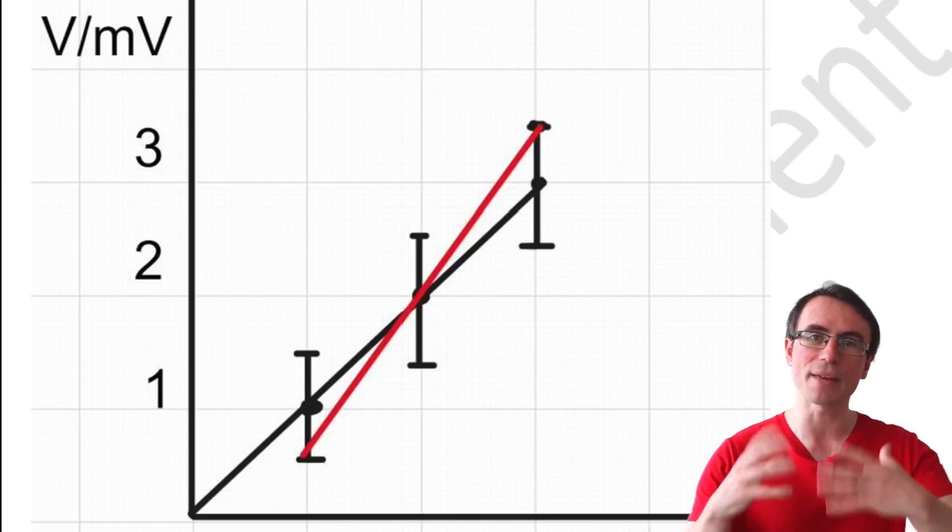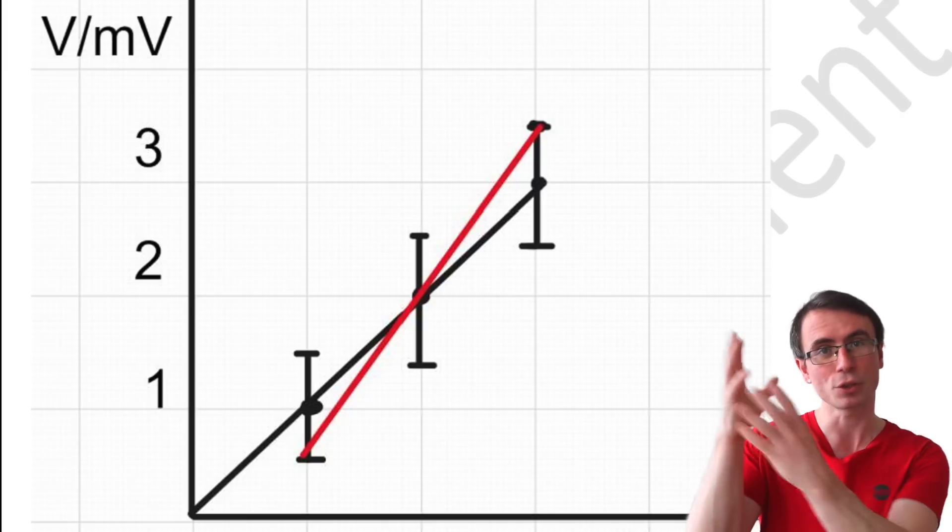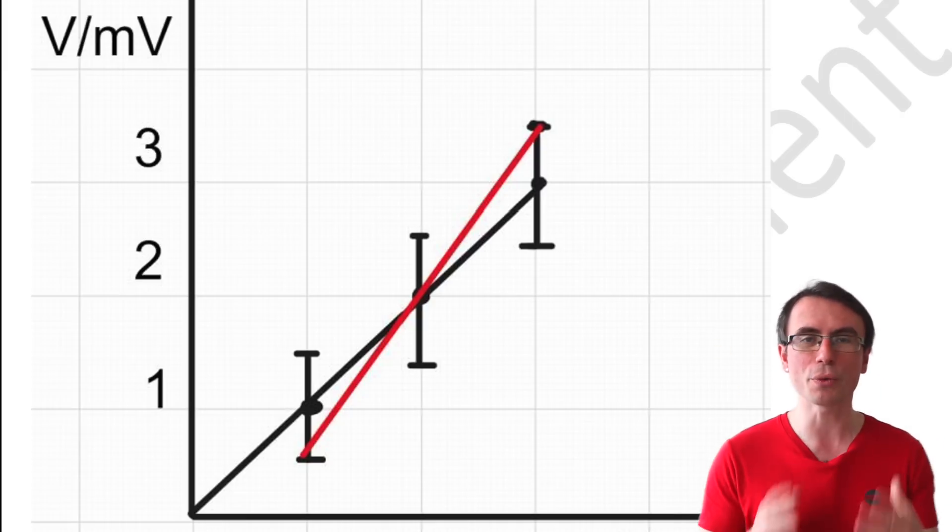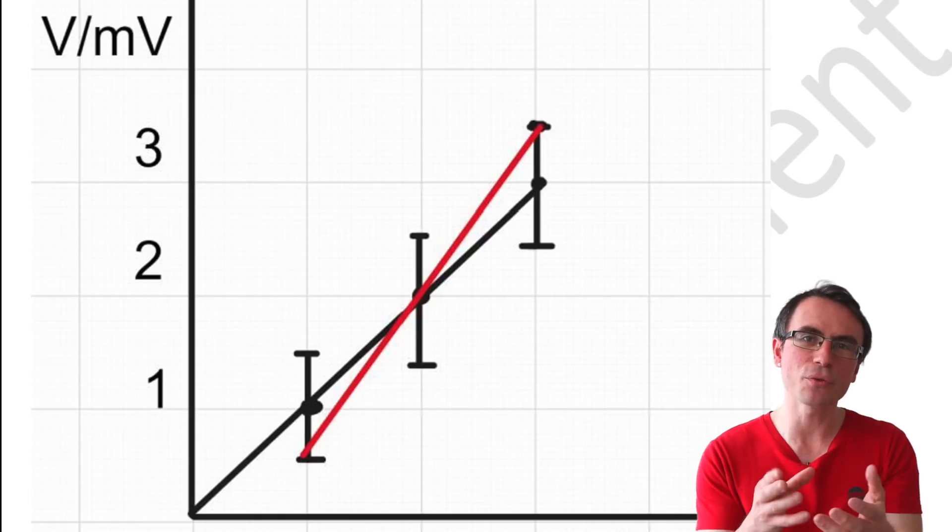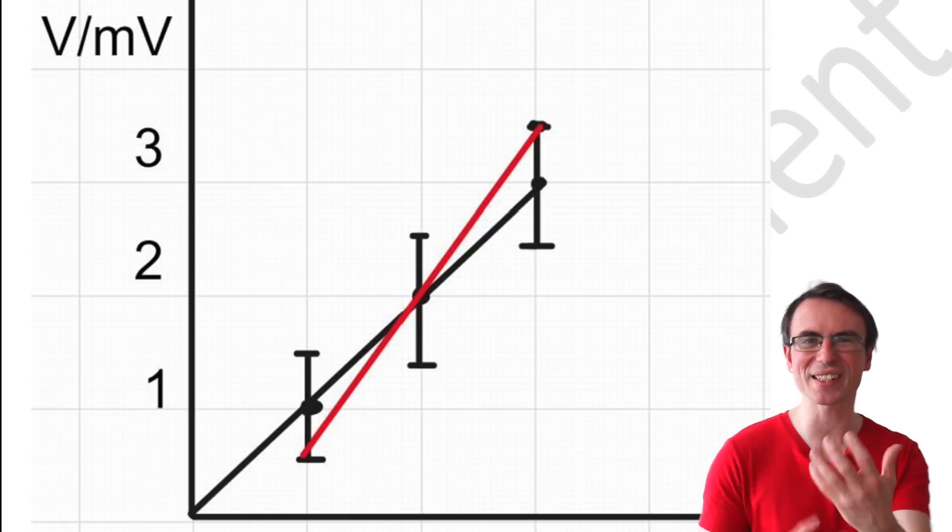Remember the rule is that if we need to draw the line of worst fit, we can go from the bottom of the bottom error bar to the top of the top error bar. The reverse is also possible, so there are two options.